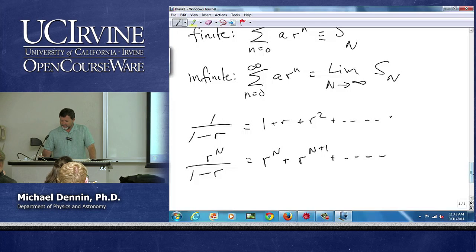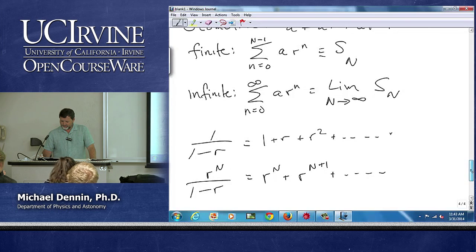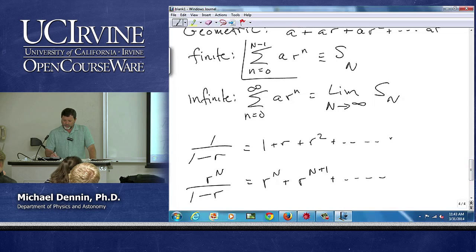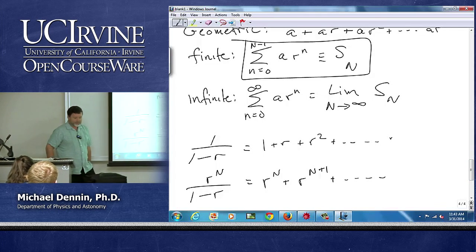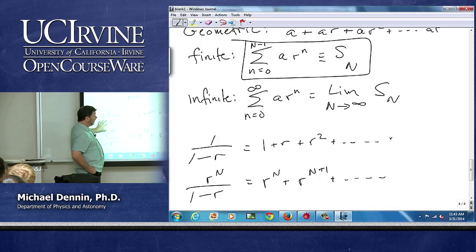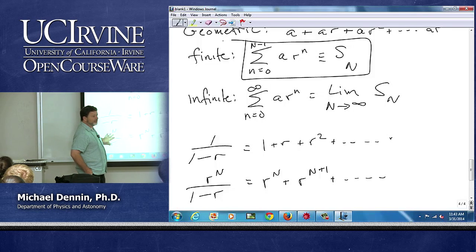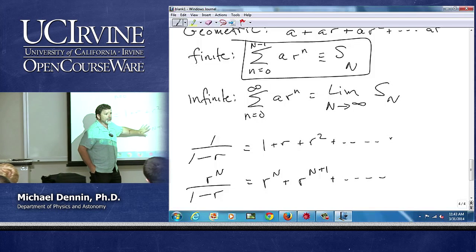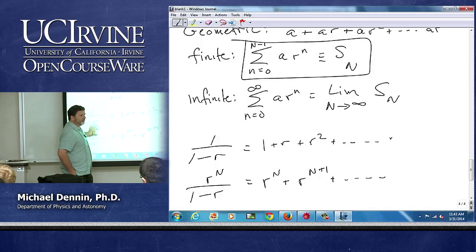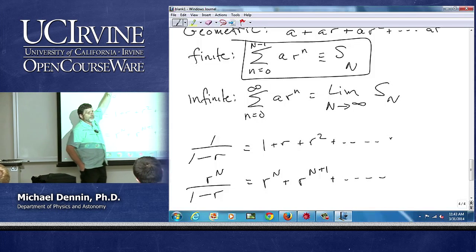Now having done that, how would I write this finite series? Knowing that I have these two things, these are both infinite series, how can I take these two infinite series and get this finite series?